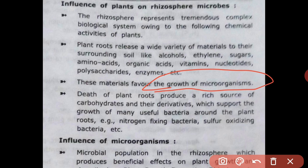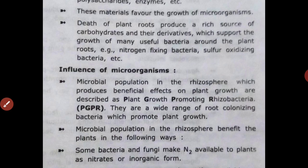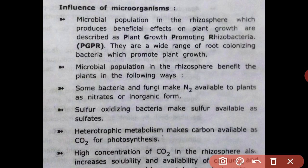The growth of plant roots produces a rich source of carbohydrates and their derivatives, which support the growth of many useful bacteria surrounding plant roots, such as nitrogen-fixing bacteria and sulfur-oxidizing bacteria. Microbial populations in the rhizosphere that produce beneficial effects on plant growth are described as Plant Growth Promoting Rhizobacteria, or PGPR.